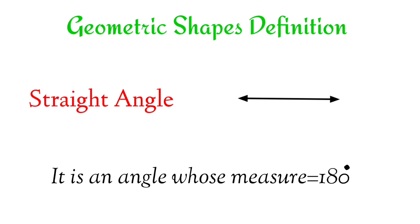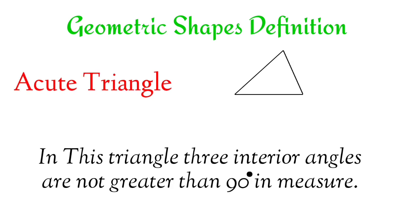Straight angle. An angle whose measure is 180 degrees. Acute triangle. In this triangle, three interior angles are not greater than 90 degrees in measure.